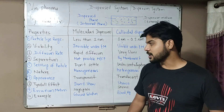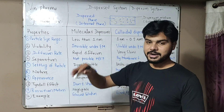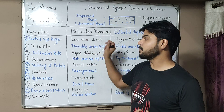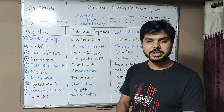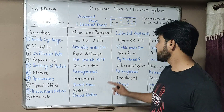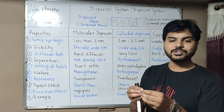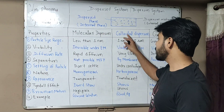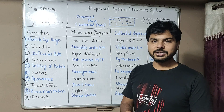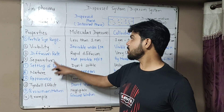For coarse dispersion, particles can be separated from simple filter paper. Now we will talk about settling of particles. Coarse dispersion particles settle under normal gravitational force. Colloidal dispersion particles settle under centrifugation. Molecular dispersion particles do not settle as particle size is very small.